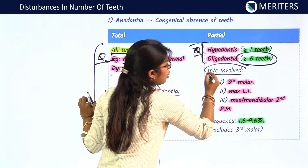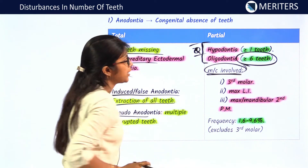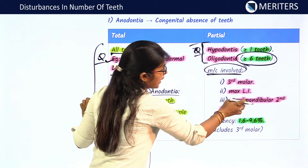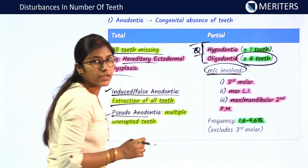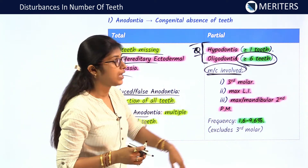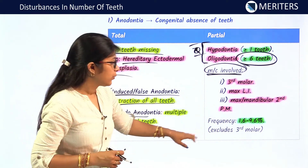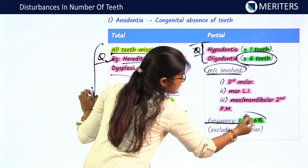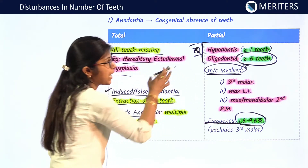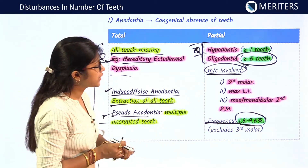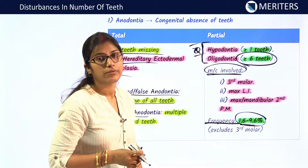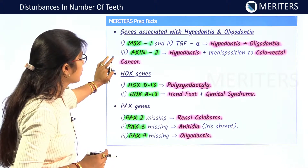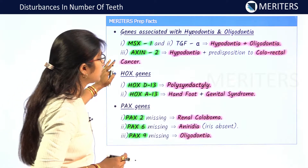The most commonly absent teeth in partial anodontia are third molars, maxillary lateral incisors, and maxillary or mandibular second premolars. The frequency of partial anodontia is around 1.6 to 9.6 percent, and this figure does not include the third molar. Now we will see some genes associated with hypodontia and oligodontia.